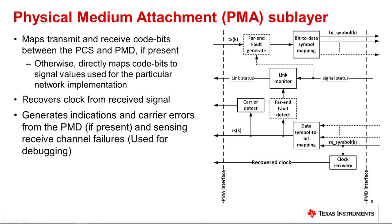The main function of the physical medium attachment sublayer, or PMA, is to convert the encoded transmit bit stream from the PCS sublayer to the appropriate data symbol for transmission on the network medium, and convert incoming data symbols from the network into bits that are then passed to the PCS sublayer. The PMA sublayer also performs carrier detection by looking for a link transition from the idle state in the received bit stream. When this transition is detected, it looks for the start of stream delimiter. Once detected, it indicates carrier detection to the PCS sublayer. It also monitors the signal status reported by the PMD sublayer if present. If auto-negotiation capability has been implemented in the PHY, the PMA sublayer will coordinate and set the link status indication pending the state of auto-negotiation and pass this to the PCS.